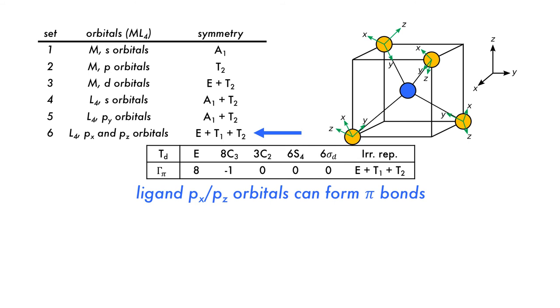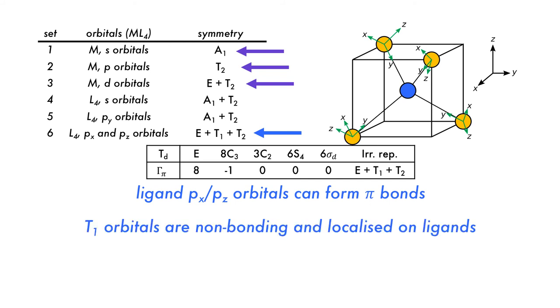They can, though, form pi bonds with the metal p and d orbitals of the correct symmetry, the E and T2 set. The T1 set has no symmetry matched pair and will be non-bonding with the orbital localized on the ligands.